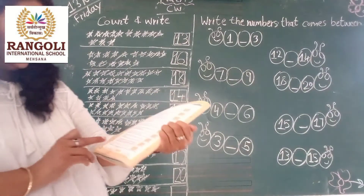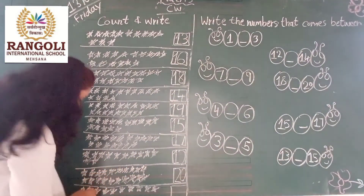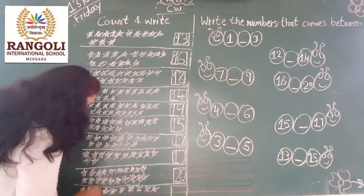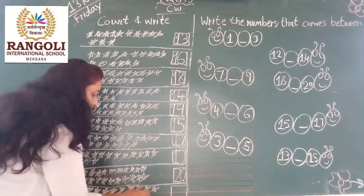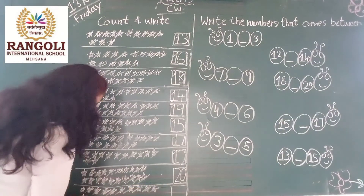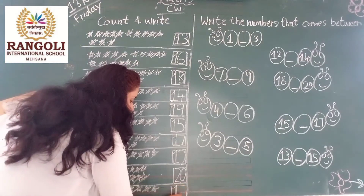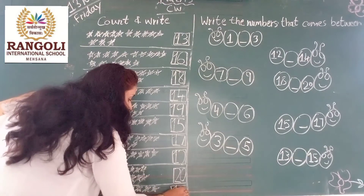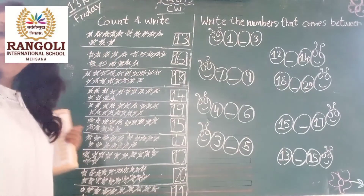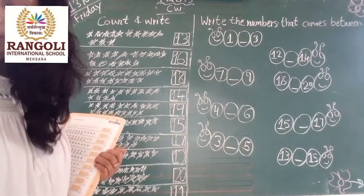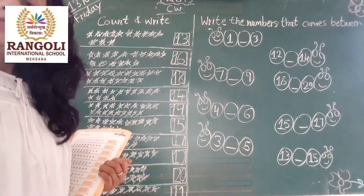Then last one. How many yellow stars? Come with me: 1, 2, 3, 4, 5, 6, 7, 8, 9, 10, 11. Okay? So, right here write 11 number.